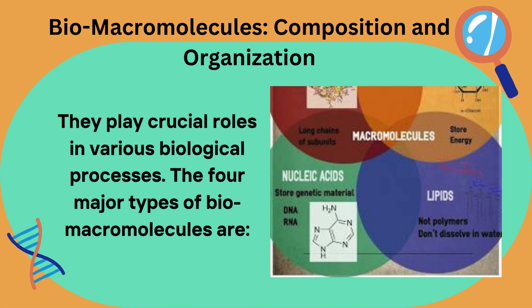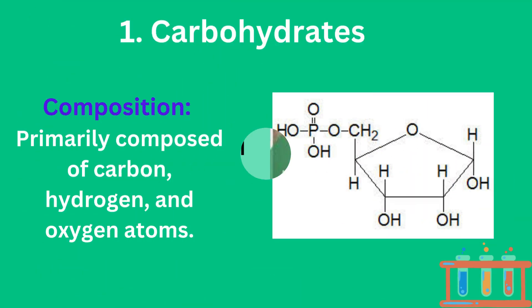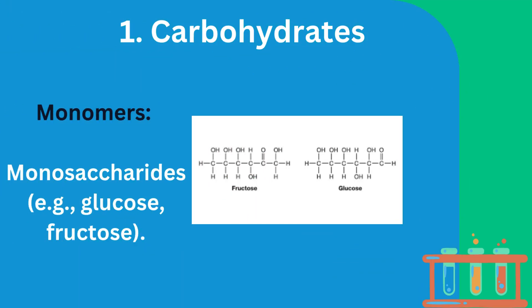The four major types of biomacromolecules are: 1. Carbohydrates. Composition: primarily composed of carbon, hydrogen, and oxygen atoms. Monomers: monosaccharides, e.g. glucose, fructose.